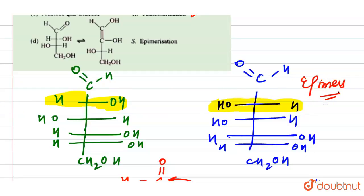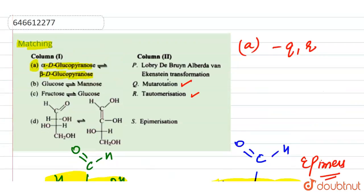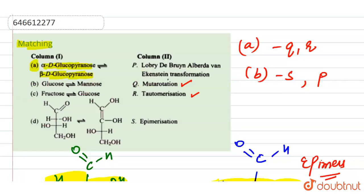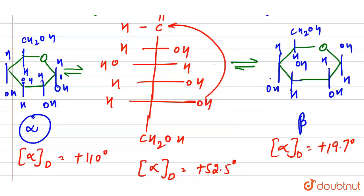Epimers are those pairs of diastereomers that differ in configuration about a single carbon atom. So for option B, the answer is S and P.